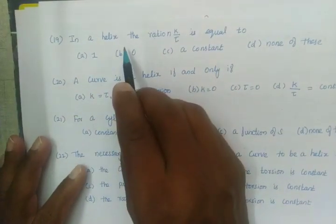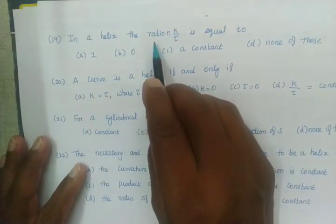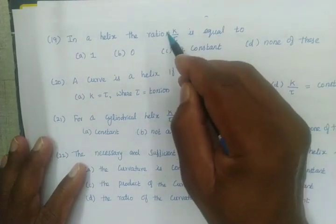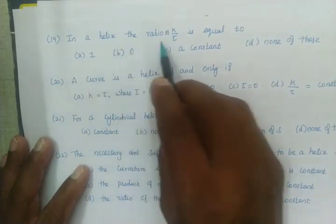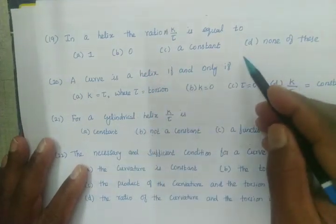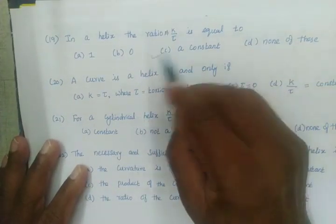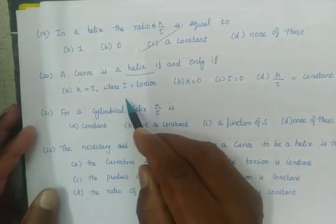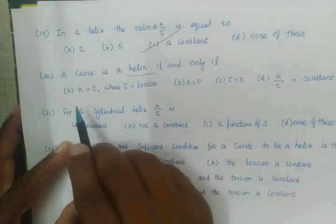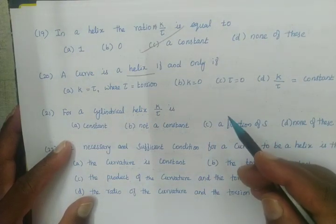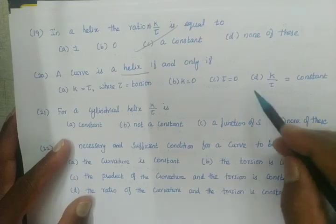In a helix, the ratio K by τ is equal to a constant, and none of these is zero. The curve is a helix if and only if K by τ equals constant. For a cylindrical helix, K by τ is always constant.